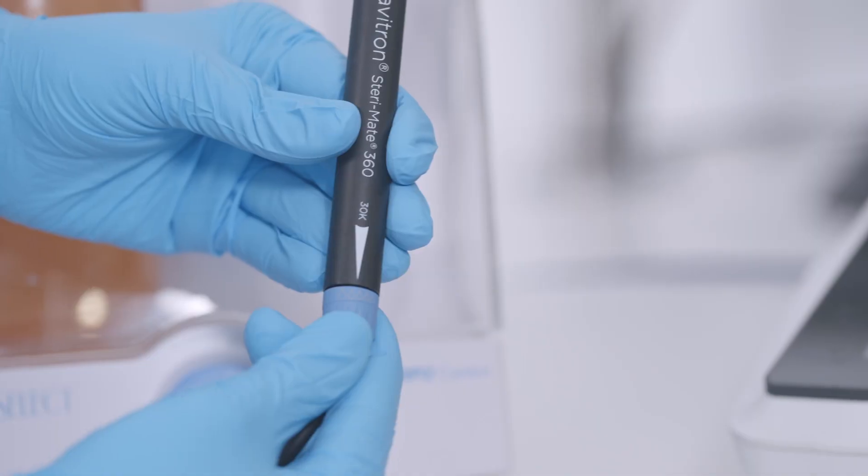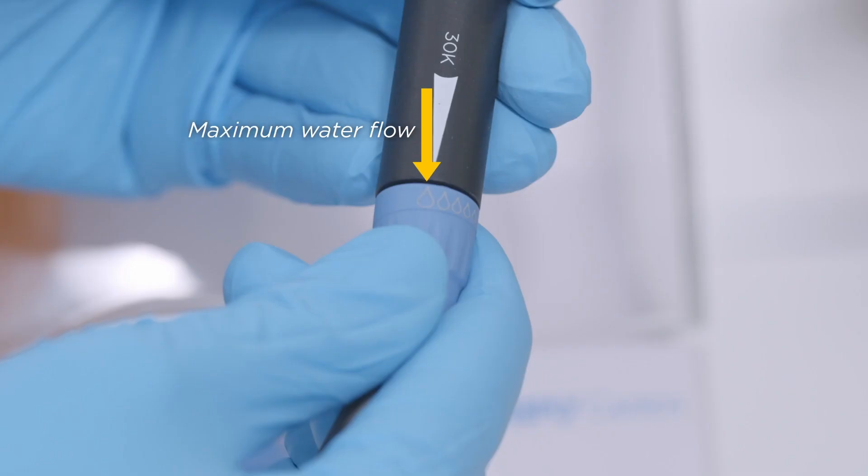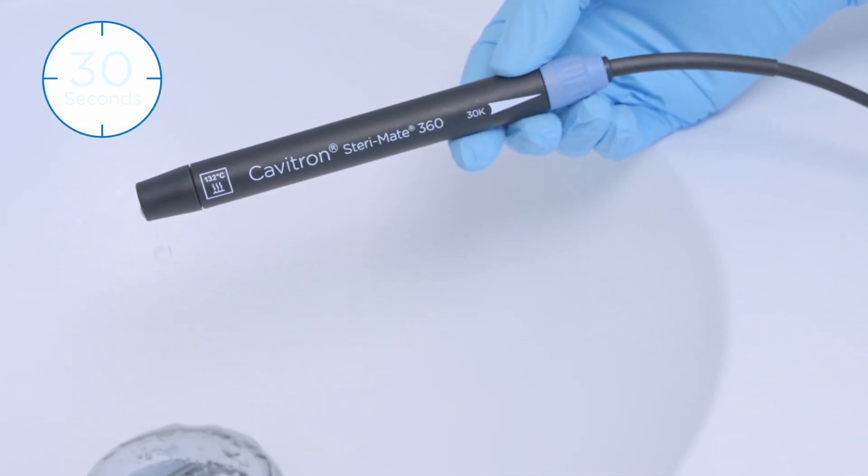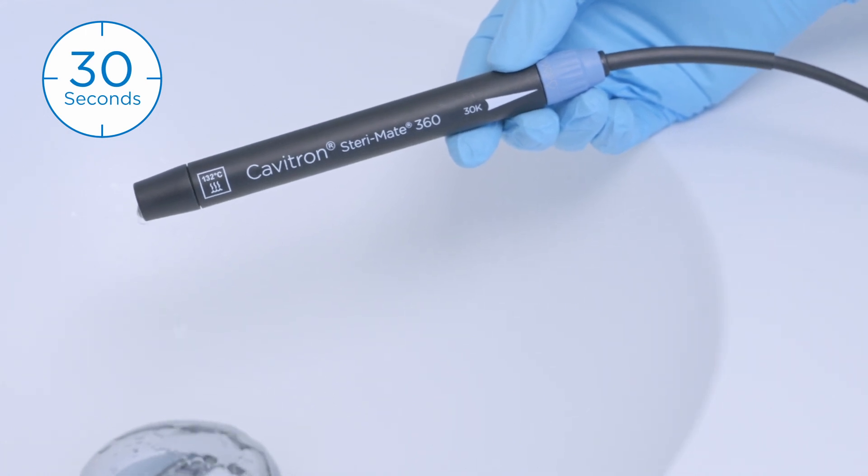Adjust the lavage water control at the base of the handpiece to maximum water flow and begin to flush the 1 to 10 sodium hypochlorite solution through the system for at least 30 seconds. Ensure that the solution is exiting the handpiece.